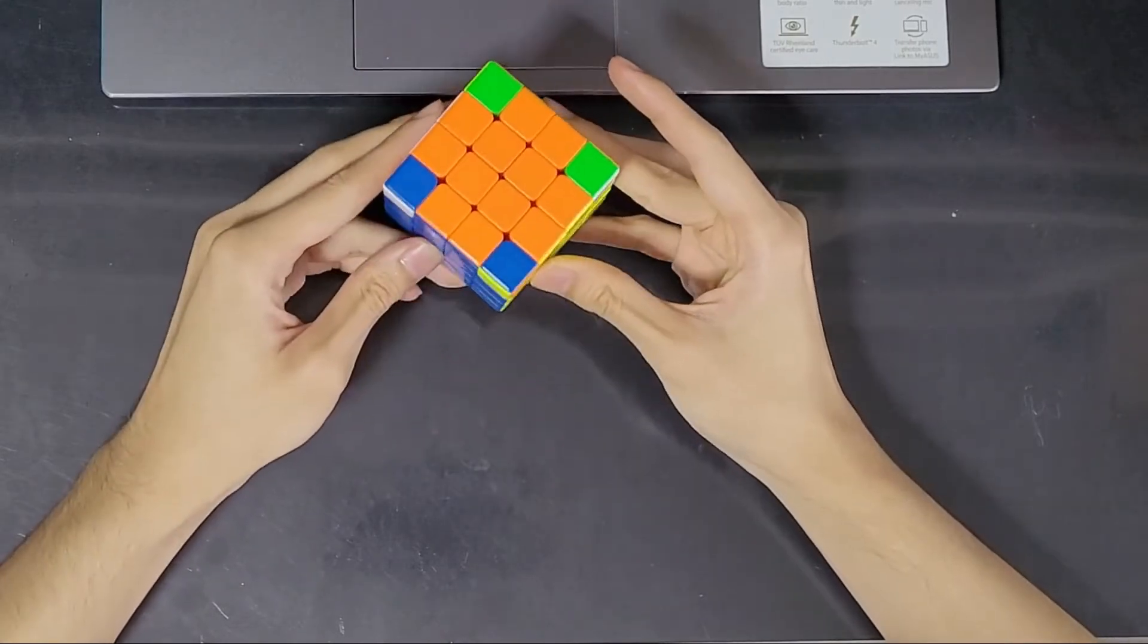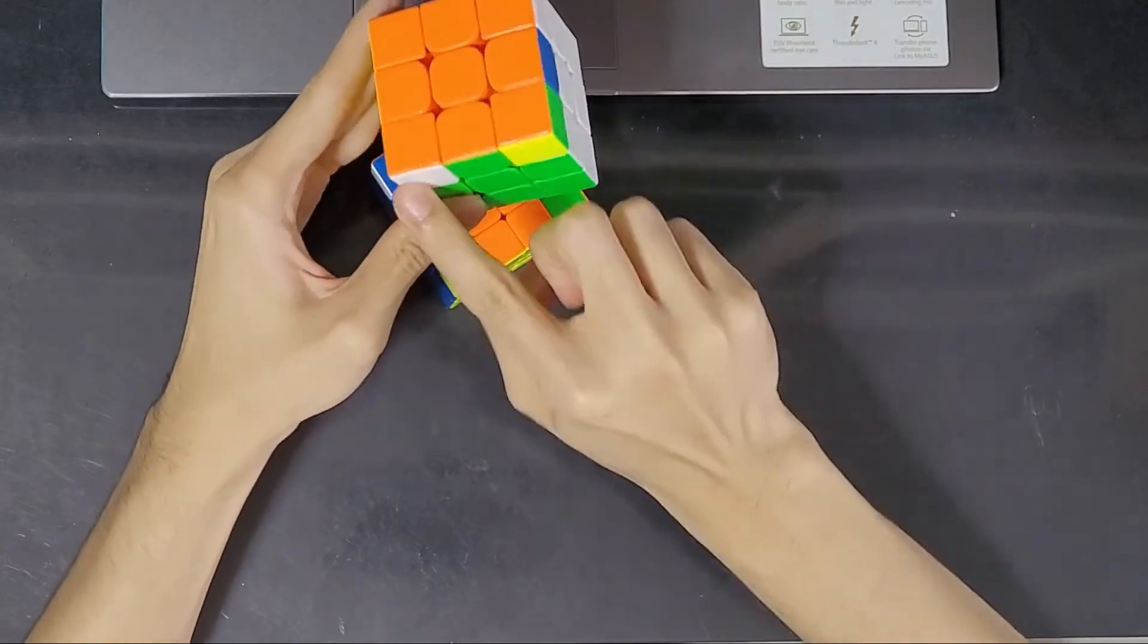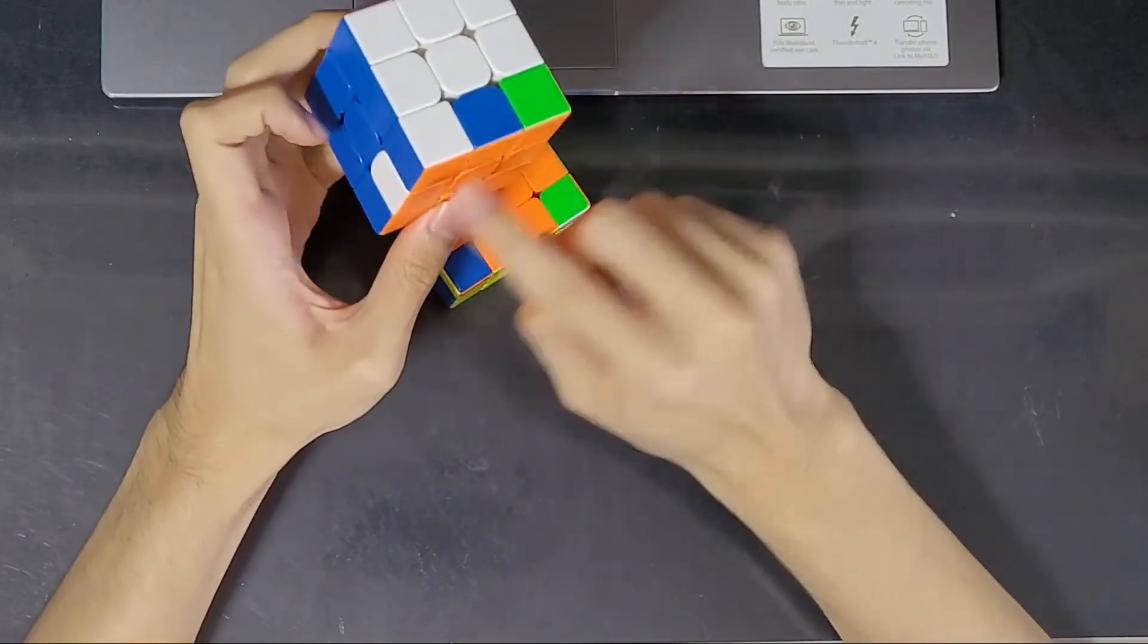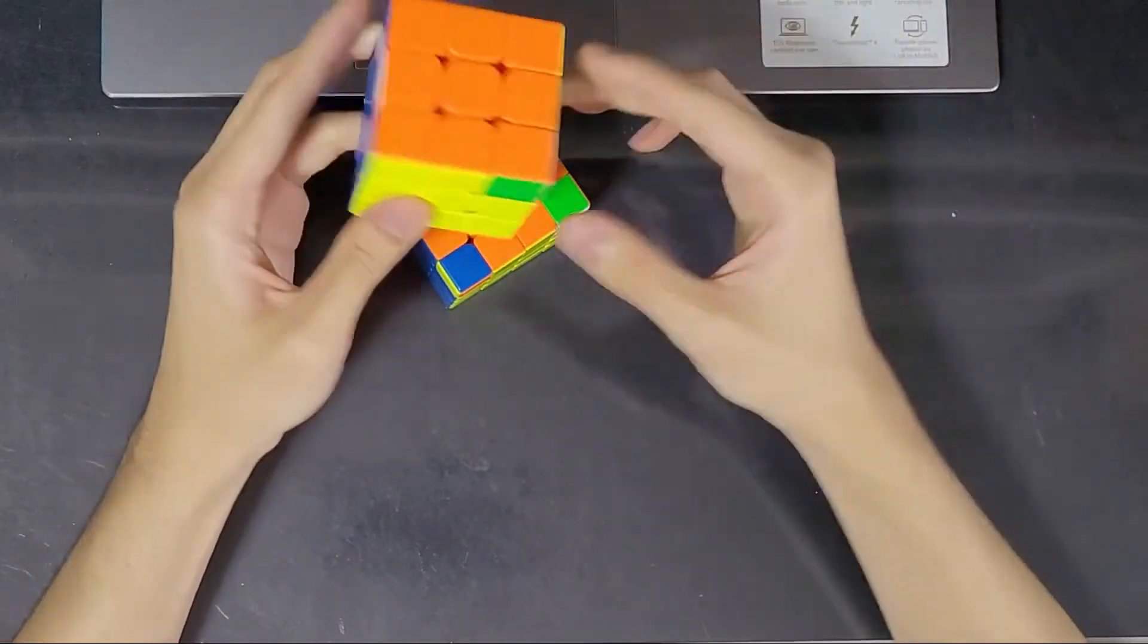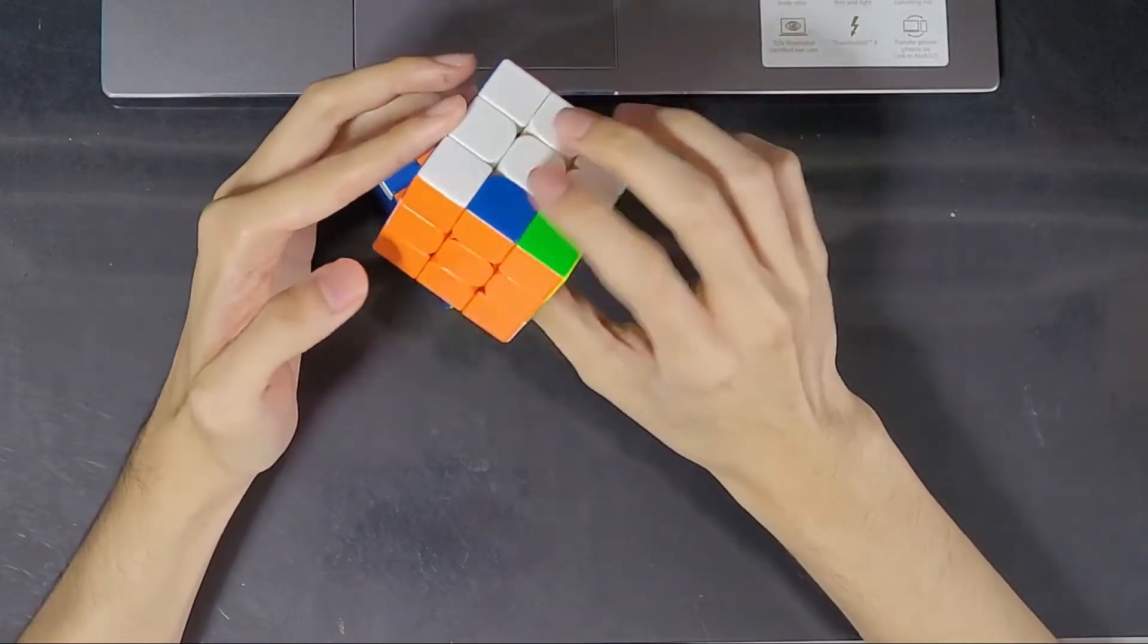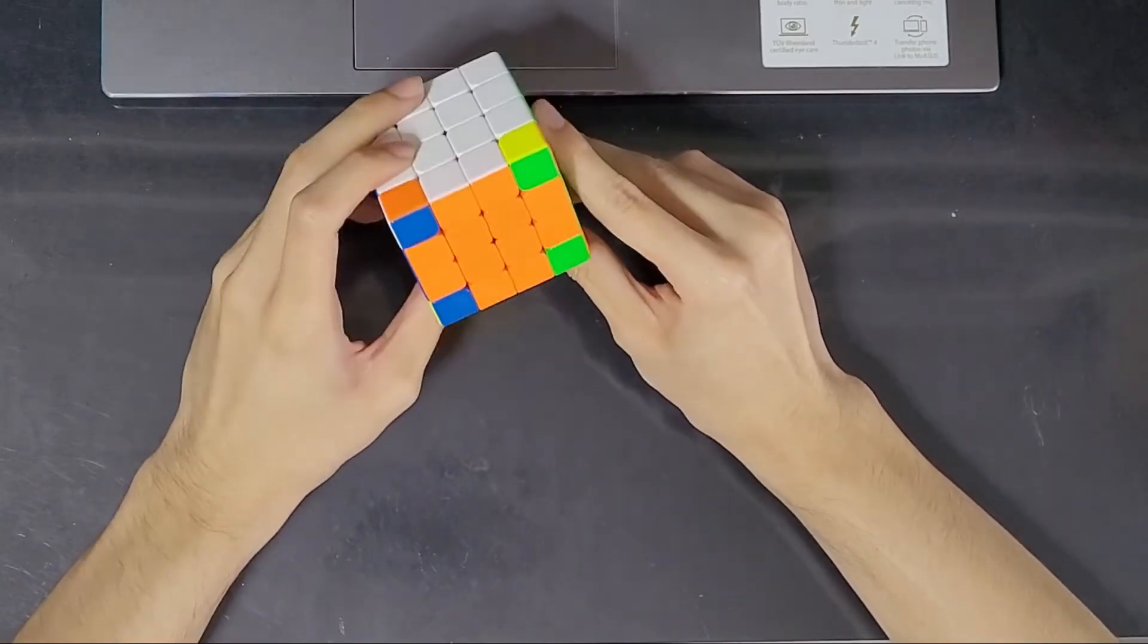But here, this is where we run into another problem. On the regular 3x3, you can never have two pieces individually swapped. You always have something else, unless, of course, somebody has disassembled your cube and reassembled it incorrectly. However, on the 4x4, it's possible to have every piece on the cube in its correct position except for two.